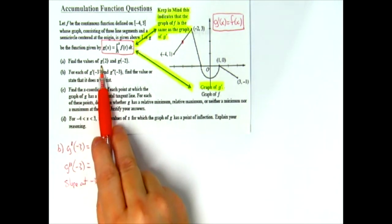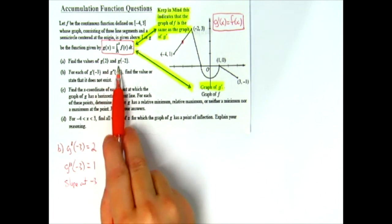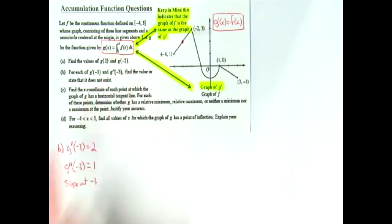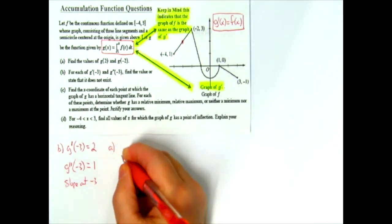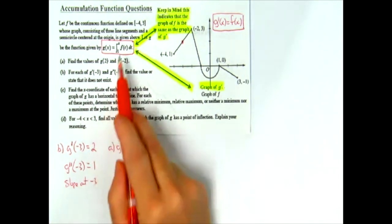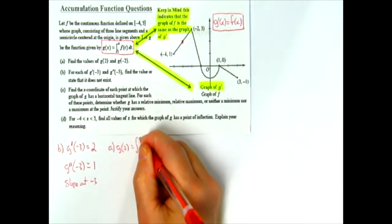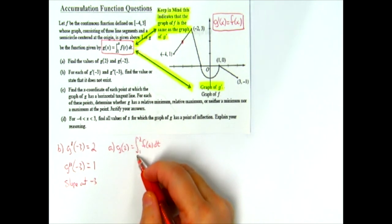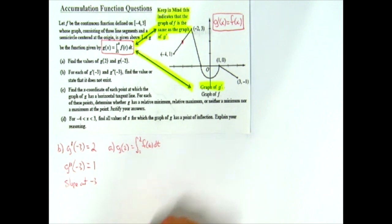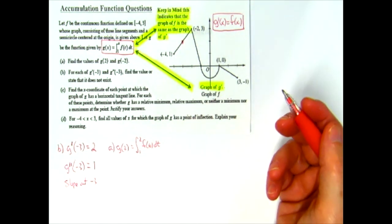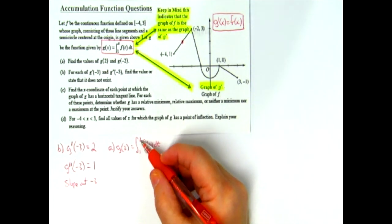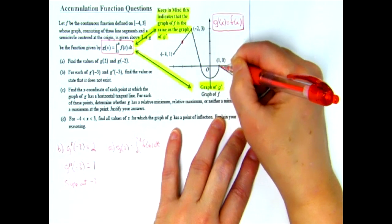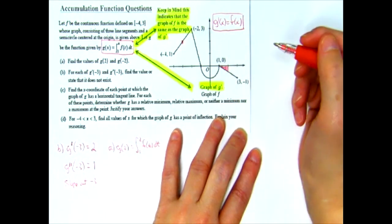Now let's do part a: find g of two and g of negative two. The g function is defined as an integral, so g of two equals the integral from one to two of f of t dt. It's called an accumulation function because the integral accumulates the area under the curve. I need the area under the curve from one to two — that region is a triangle, so I can calculate it using one-half base times height.